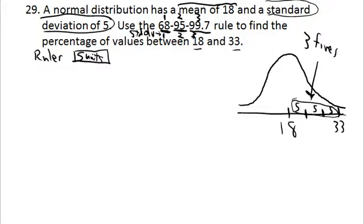The 68-95-99.7% rule talks about the area between two values on both sides of the mean. Even if the problem doesn't ask for it, you also go 5 units in the other direction the same number of times. Since it was 3, you go 3 standard deviations the other way: 18 minus 5 is 13, minus 5 is 8, minus 5 is 3.